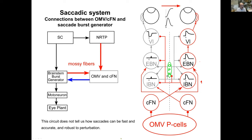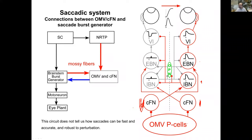The question is: how does the left CFN, which projects to the active side of the brainstem, and the right CFN — which influences the part of the brain that is actually inhibited and quiet — contribute? The Purkinje cells in the oculomotor vermis inhibit the CFN. In short, this circuit alone does not tell us how saccades can be fast and accurate. Moreover, saccades are also robust to perturbation — you perturb them and they still get to the target.